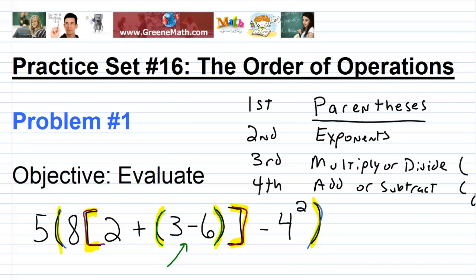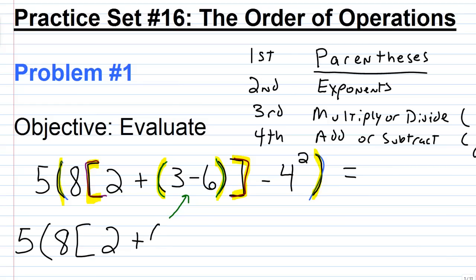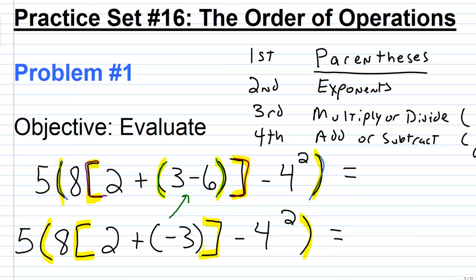Three minus 6 is negative 3, so we replace that quantity with negative 3. The expression becomes: 5 times, in parentheses, 8 times, open brackets, 2 plus negative 3, then minus 4 squared.